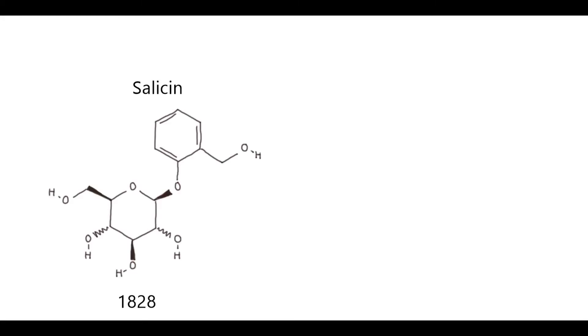In 1828, Johann Buchner was able to obtain relatively pure crystals of a substance called salicin, an anti-inflammatory agent found in the leaves and bark of the willow tree.